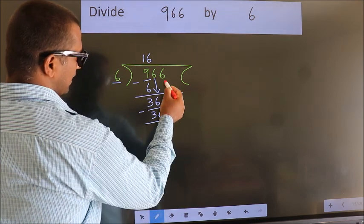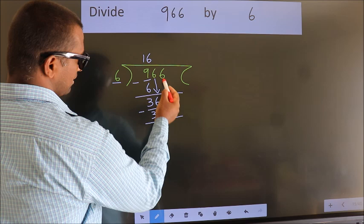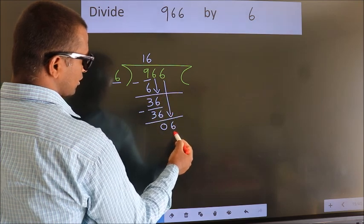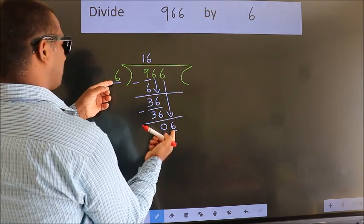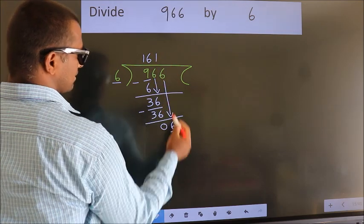After this, bring down the beside number. So, 6 down. 6. When do we get 6? In 6 table. 6 once 6.